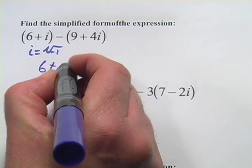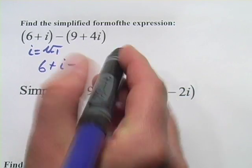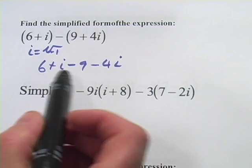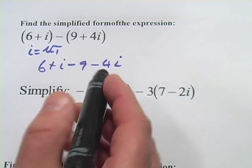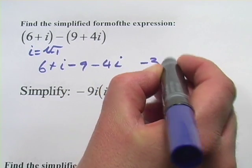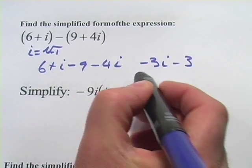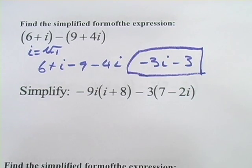That would give us 6 + i - 9 - 4i, and then let's combine our i terms. We've got a positive 1i and a negative 4i, so that would be -3i, and then we've got our constant term, a 6 and a negative 9, so that would be -3, and that's all there is to it. We've simplified that one.